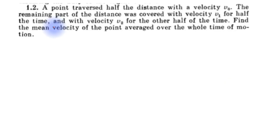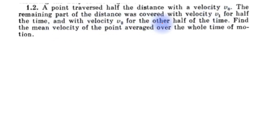The second question of the book: a point traverses half the distance with velocity v0. The remaining part of the distance was covered with velocity v1 for half the time and with velocity v2 for the other half of the time. Find the mean velocity of the point averaged over the whole time of motion.